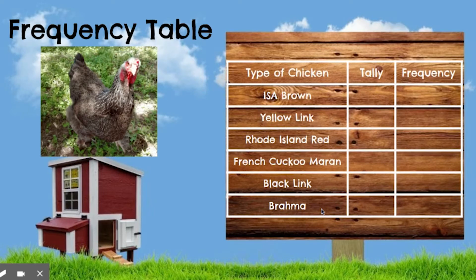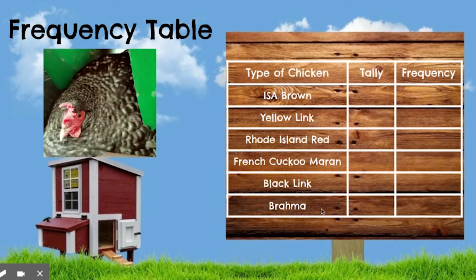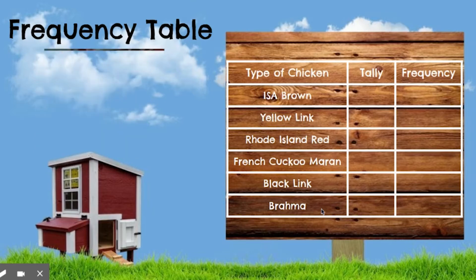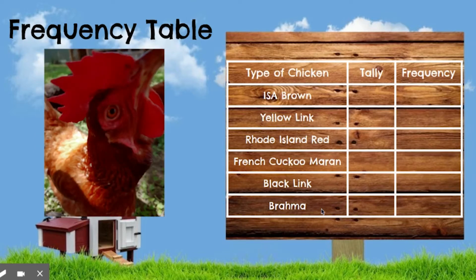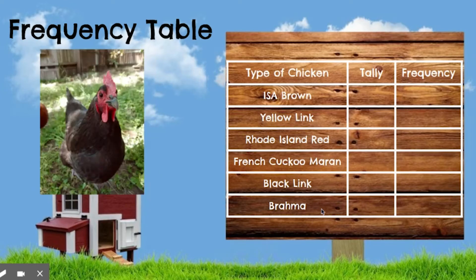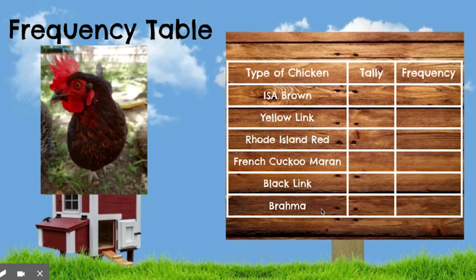Then we have our full-grown chickens. This is a Brahma — her name is Mama, or Brahma Mama. This is a French cuckoo marin named Frenchie. Then we have another French cuckoo marin named Cuckoo — because she's crazy — she likes to sit in the nesting box all the time but does get out to eat. Then we have our yellow link chicken, Sunflower. We have one Rhode Island red named Red, another named Millie, and another named Maude. We have a black link named Pip, and another black link named Dash — even though it has some brown feathers, it's still a black link. And those are our chickens.